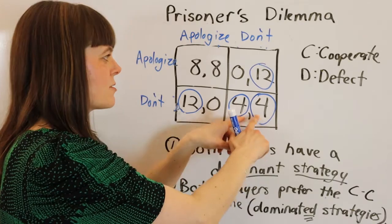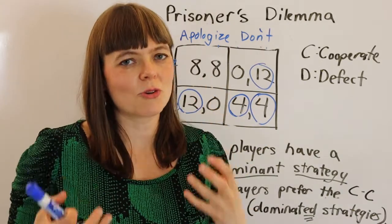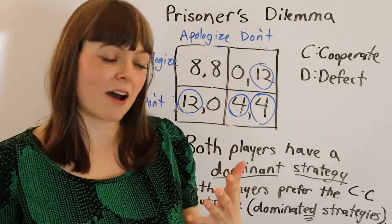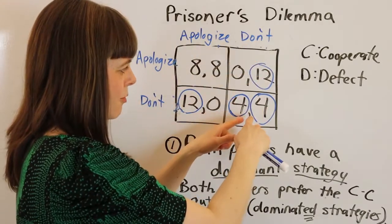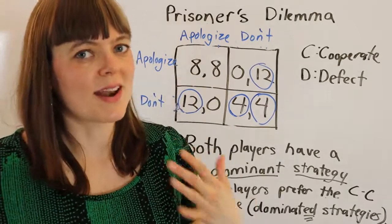However, both players may prefer the scenario where they both apologized. And you've restored a greater degree of trust in the friendship. So, if those are the payoffs, then we have a prisoner's dilemma where there's dominant strategy for both players, but they both prefer the situation where they both played their dominated strategy.